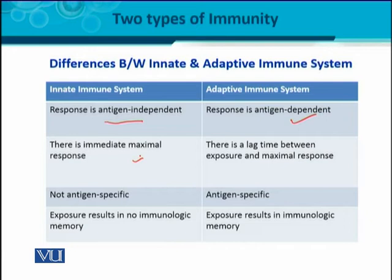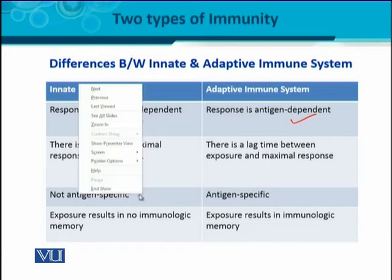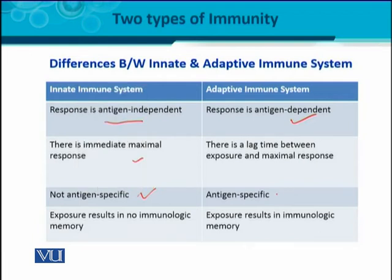Similarly, the innate immune system is non-antigen specific, meaning it is non-specific. While in the case of the adaptive immune system, it is specific. The specificity of the antigen determines how and after what time the adaptive immune system is to be activated.